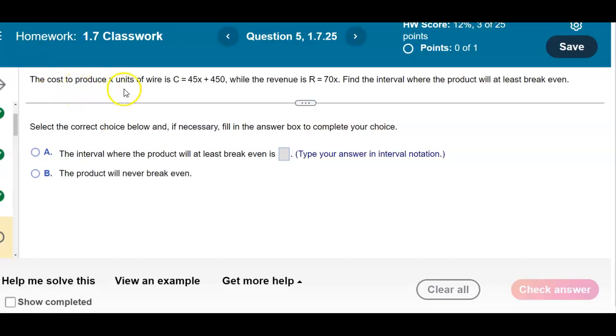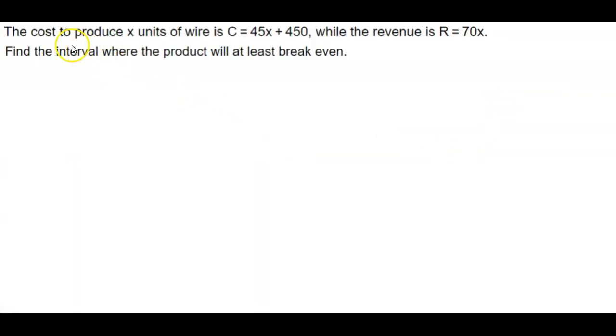The cost to produce X units of wire is C equals 45X plus 450, while the revenue is R equals 70X. You want to find the interval where the product will at least break even. So the at least break even is what's important here. So here is our question.